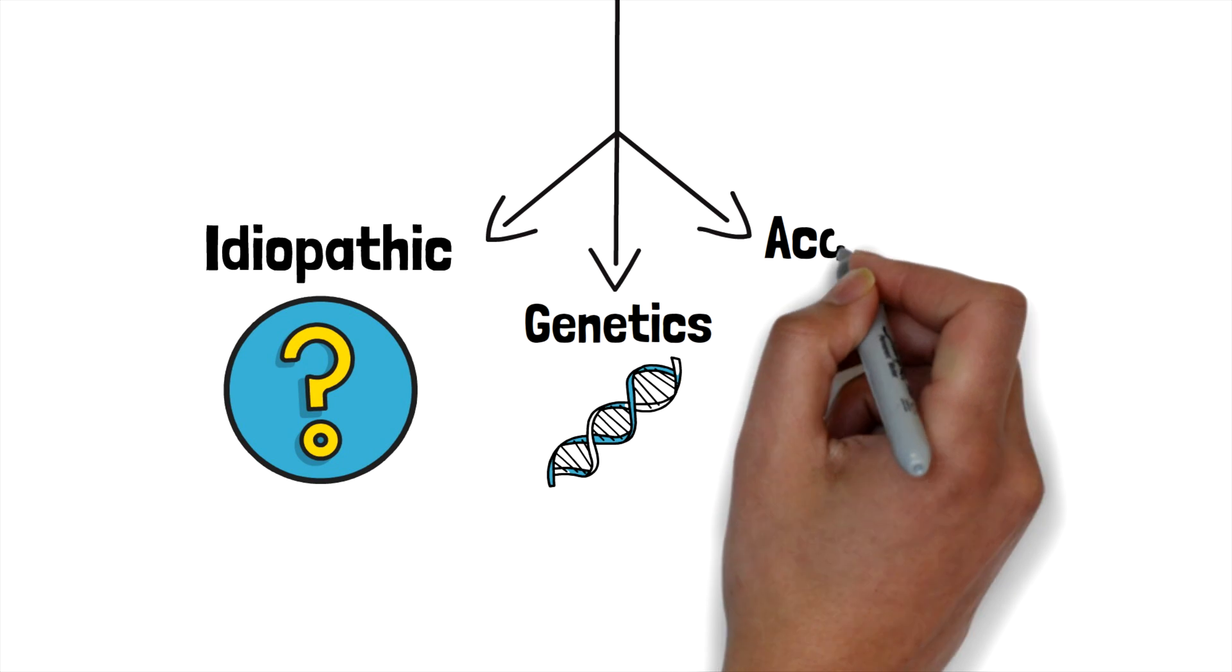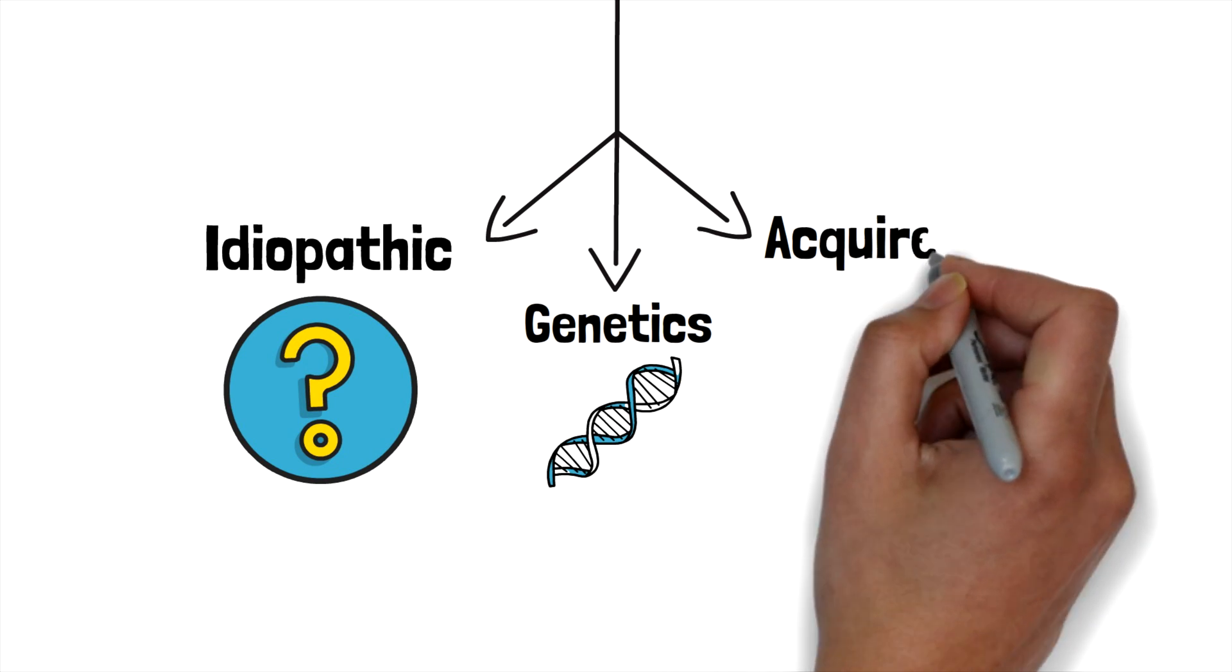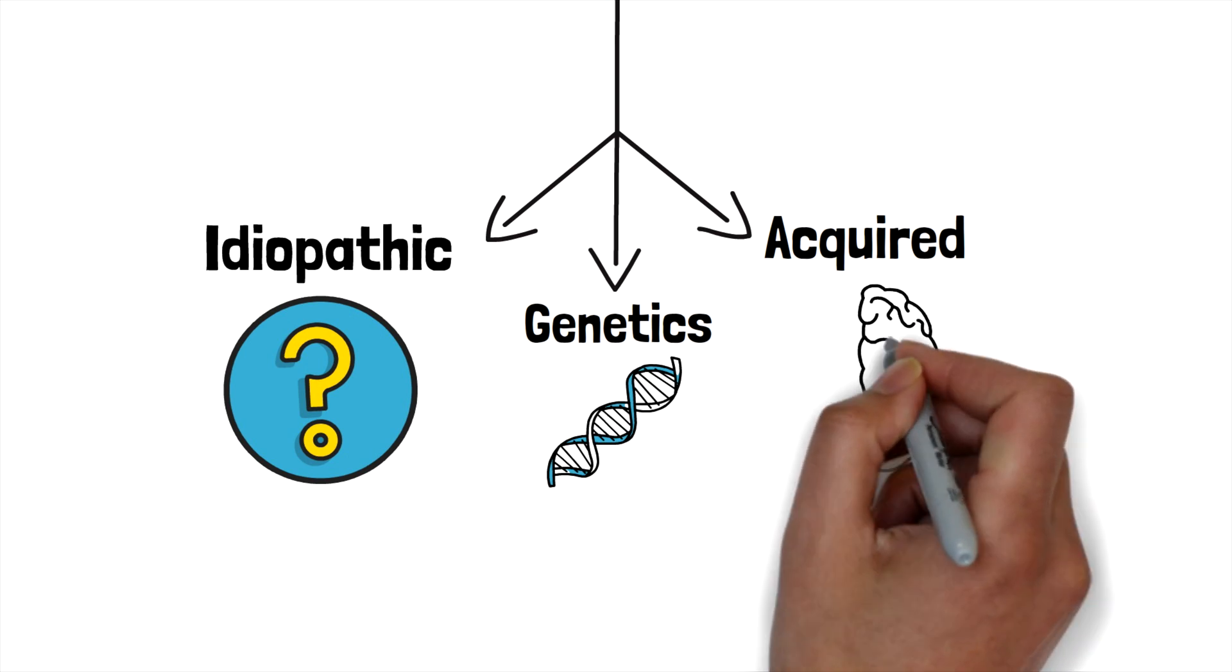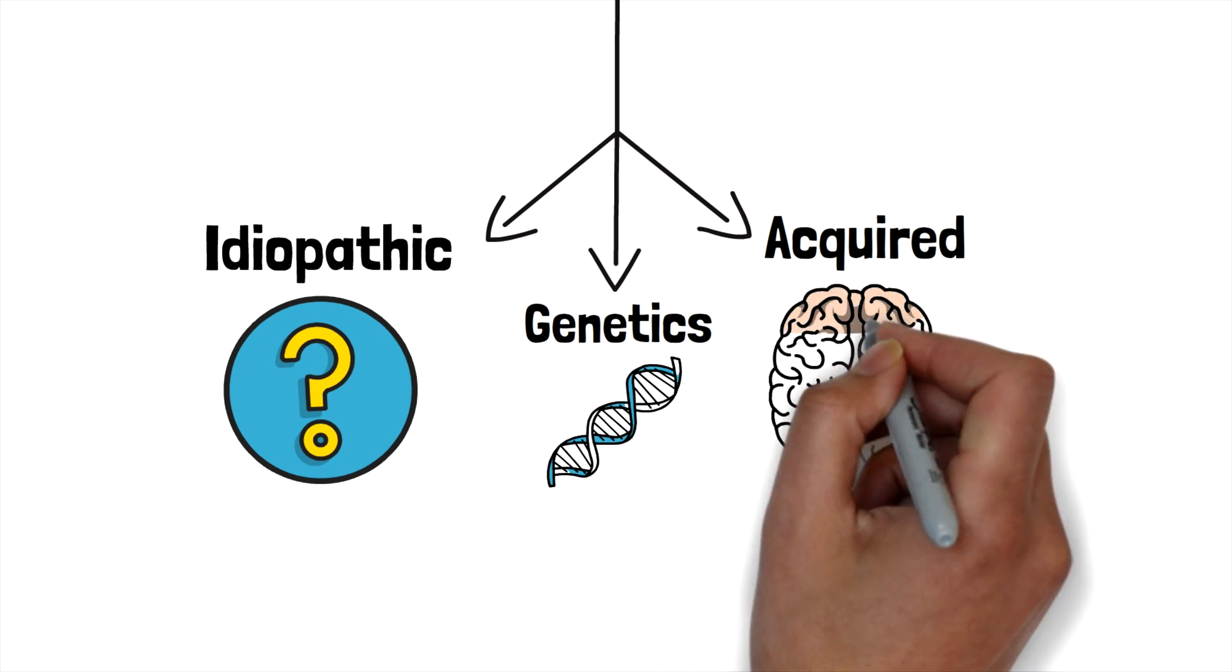However, dystonia can also be acquired through damage to specific areas in the brain by strokes, infection, tumors, oxygen deprivation, poisoning, and just general trauma.